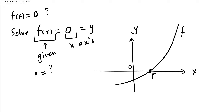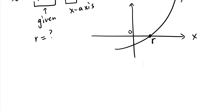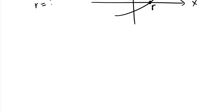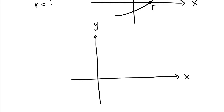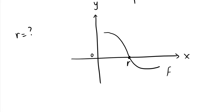How did Newton come up with this? It's similar to the linear approximation method. In linear approximations, we approximated a function by its tangent line at a given point. Let me interpret this graphically so you can see what's going on. We have the graph of function f, and we're interested to find and approximate the r value.